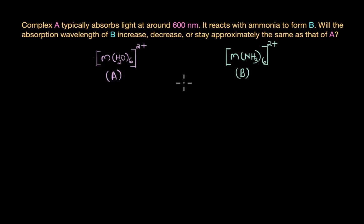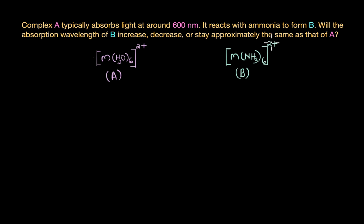The question says complex A typically absorbs light at around 600 nanometers. Complex A is M(H₂O)₆²⁺, which reacts with ammonia to form complex B, M(NH₃)₆²⁺. The question is: will the absorption wavelength of B decrease, increase, or stay approximately the same as that of A? In other words, is the absorption wavelength of complex B also around 600 nanometers, less than 600 nanometers, or greater than 600 nanometers?